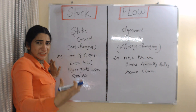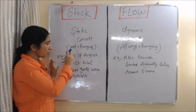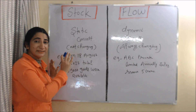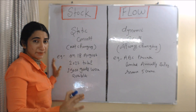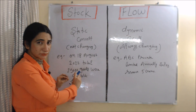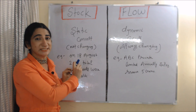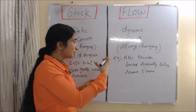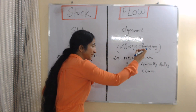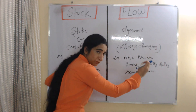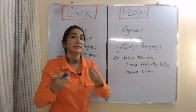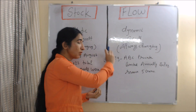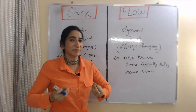The last difference is that stock is a static concept — meaning it is not changing. For example, if I say on 18 August 2022, a total of 25,000 goods were available, that is a non-changing concept — at that particular point of time, that stock of goods was available. On the other hand, flow is a dynamic concept, meaning it is always changing. For example, if I say ABC Private Limited's annual sales revenue is 5 crore, the sales revenue changes every day and every month — I am only giving information about the annual figure. So we can say that flow is a dynamic, changing concept.